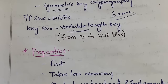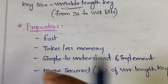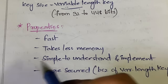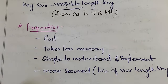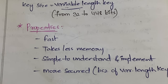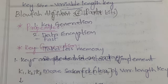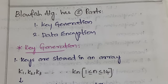The properties of this algorithm are: it is very fast, it takes less memory, it is simple to understand and implement, and it is more secure. It is more secure because it has a variable length key — not a fixed length. So even if the attacker knows you are using the Blowfish algorithm, they cannot find out the length of your key.